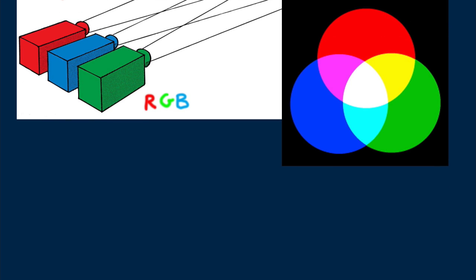When two colors add to produce white, they are called complementary colors. We see that red and cyan add to produce white, so red and cyan are complementary colors. Likewise for green and magenta, and for blue and yellow.